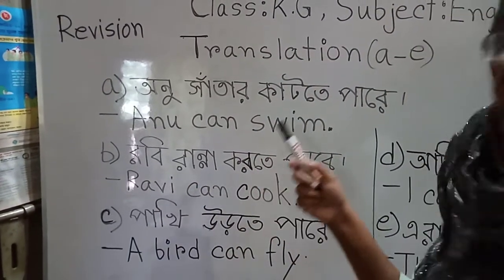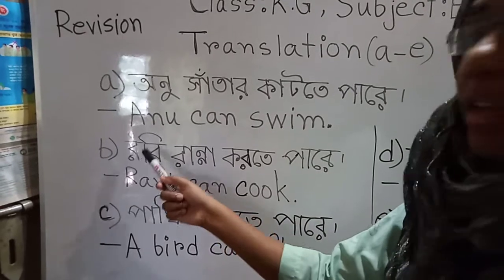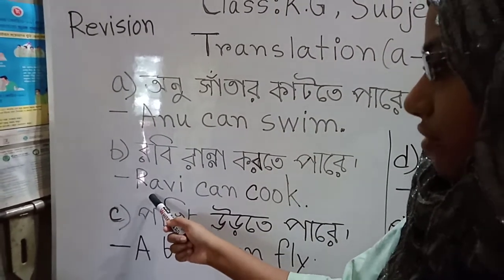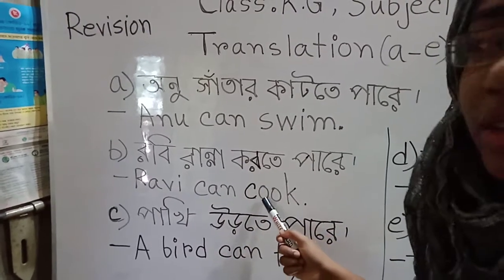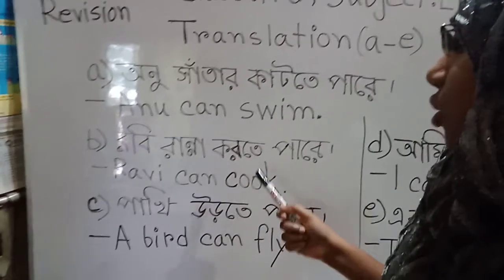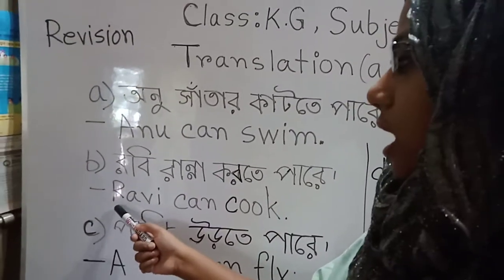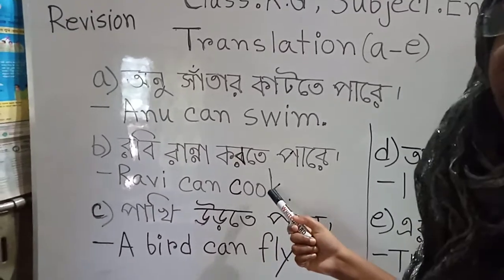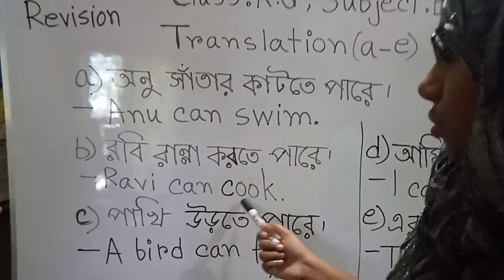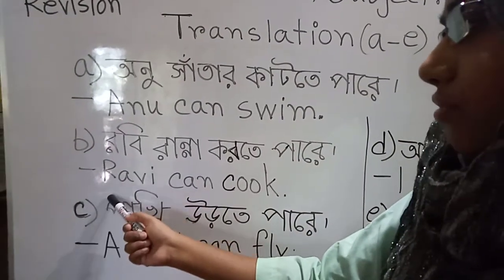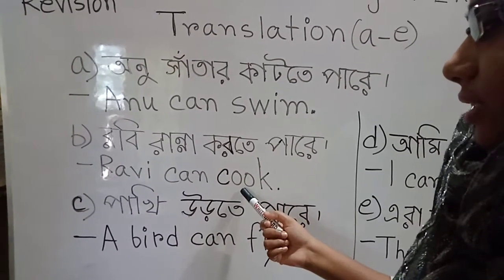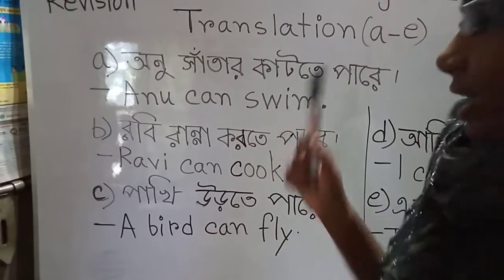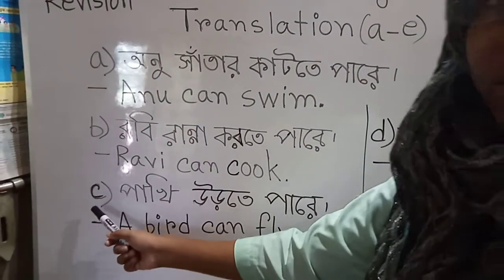Our next sentence is Robi ranna kurte pare. What will be the sentence in English? Let's spell the words: R-A-V-I — Robi. C-A-N — can, means 'pare'. C-O-O-K — cook, means 'ranna kora'. So Ravi can cook. Don't forget to put a full stop at the end of the sentence.